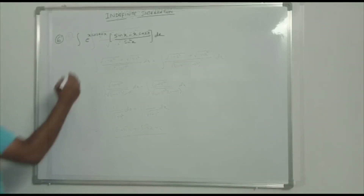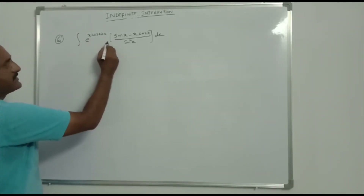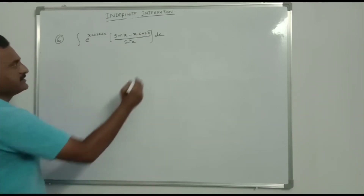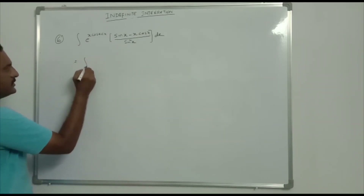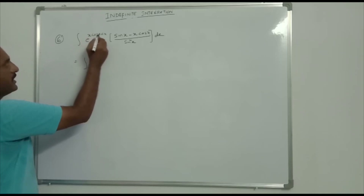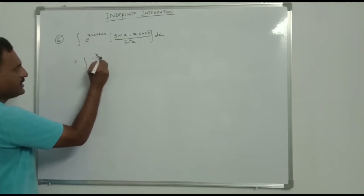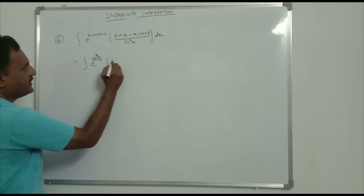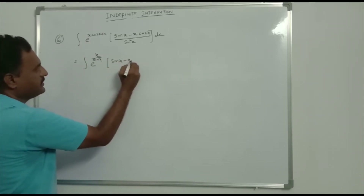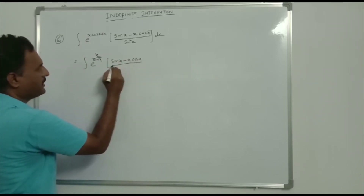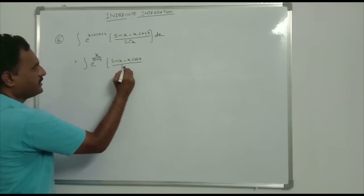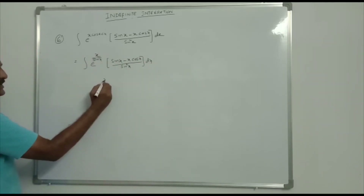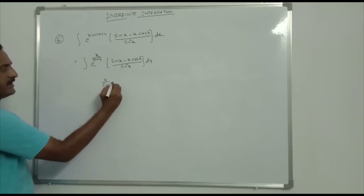Integration of eˣ · cos x · (sin x - x cos x)/sin²x dx. This is equal to integration of eˣ · cos x, written as x/sin x, into (sin x - x cos x)/sin²x dx. Here x/sin x is taken as t.